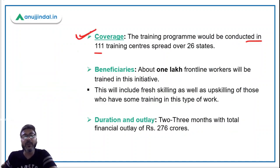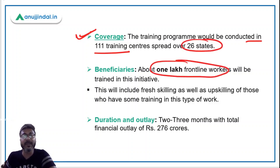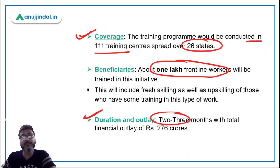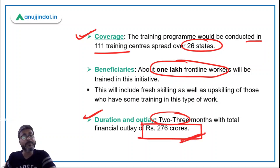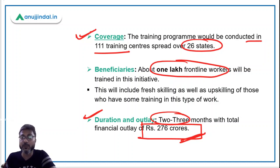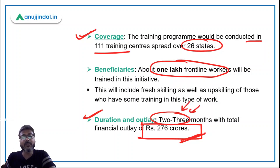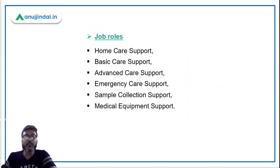Regarding coverage, this program would be conducted in 111 training centers spread across 26 states, and about one lakh frontline workers will be benefited. The duration of this program will be two to three months, with a total outlay of rupees 276 crores. Remember the total outlay — 276 crores — and the total duration is two to three months.